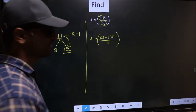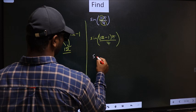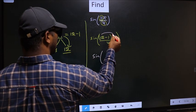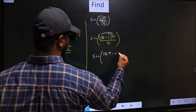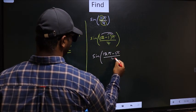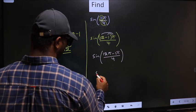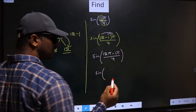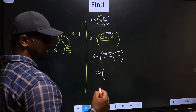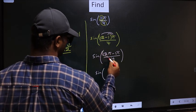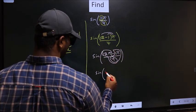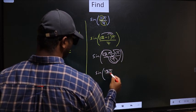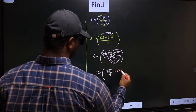Next. Sine. Now you should open up the brackets. You get 12π minus 1π by 4. Sine. Now you should split the denominator in this way. That is 12π by 4 minus 1π by 4.